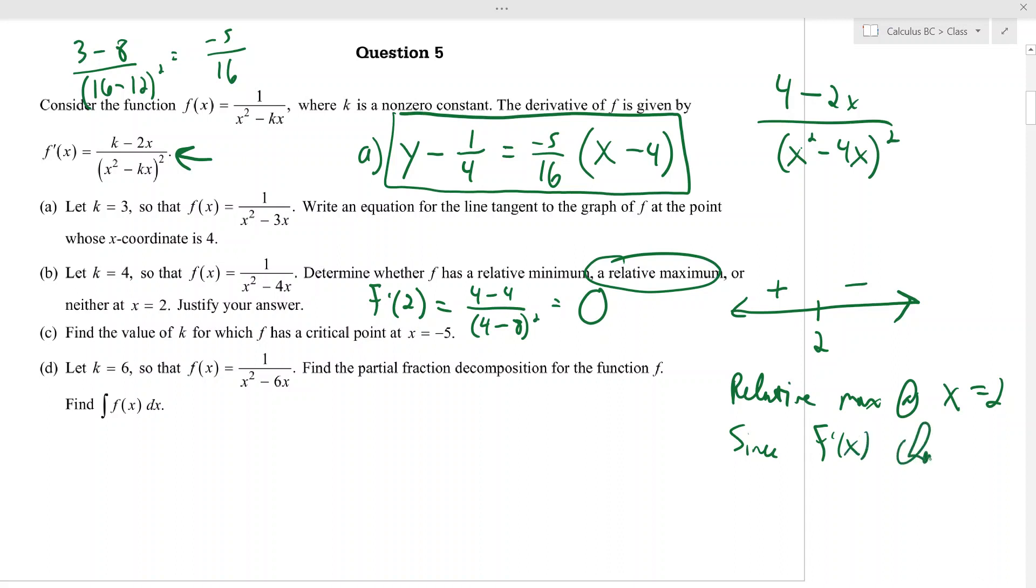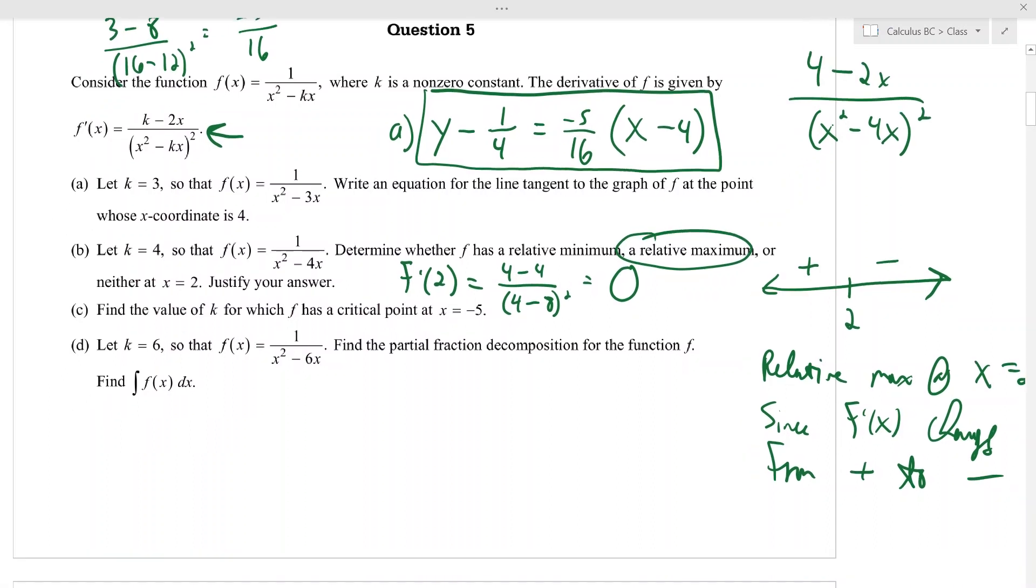So we saw it changes from positive to negative. Okay, find the value—was critical point at negative 5. We'll have a critical point; we just need the derivative to be 0. And if k is—well, we don't know k, so this is part c. But if x is negative 5, you're going to get k plus 10 over negative 5 squared is 25 plus 5k, squared.